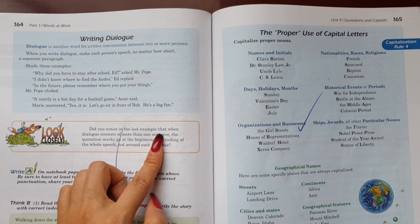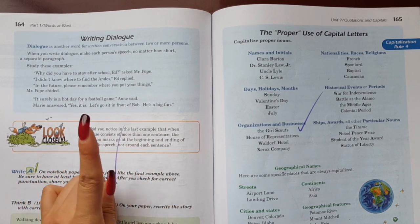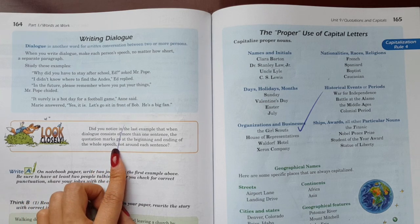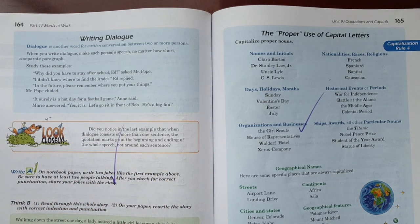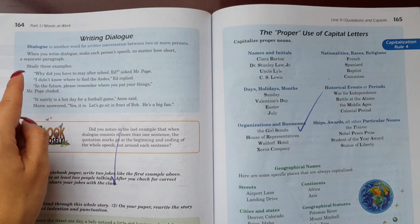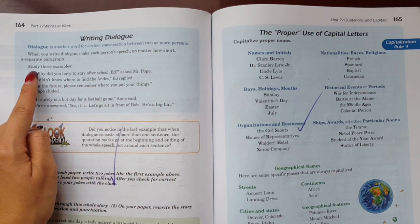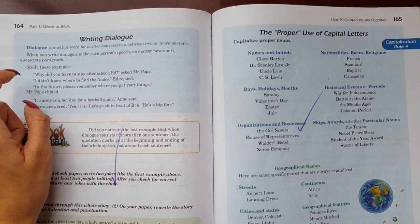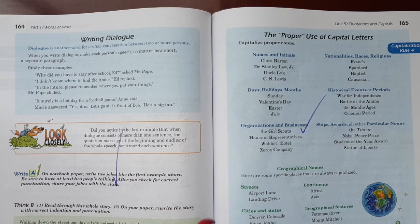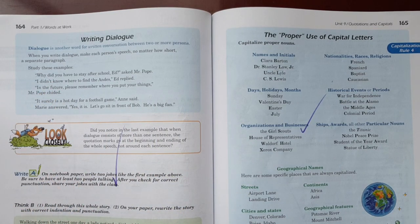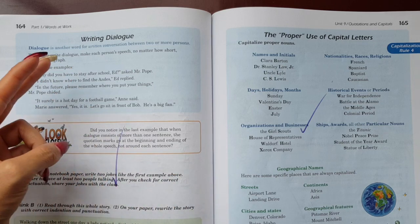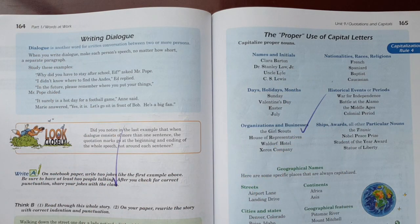It says here, did you notice in the last example that when dialogue consists of more than one sentence, the quotation marks go at the beginning and ending of the whole speech, not around each sentence. What are they telling us? If you noticed, for example, that when a direct quotation goes beyond one sentence, and it's not only one sentence but also goes down here and down here, the quotation marks will always go from the beginning to the end. It doesn't matter if it went beyond being just one sentence or just one line. If the exact words are so many that they're a whole paragraph, well that whole paragraph should go inside quotation marks.